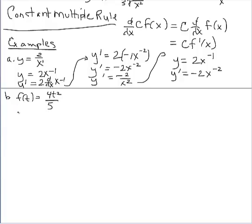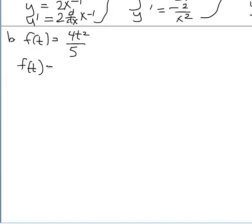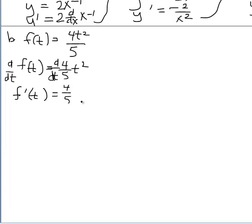I'm going to bring down f of t and get it ready for differentiation: 4 fifths times t squared. Now I'll bring in the derivative operator on both sides of the equation, d over dt. So this derivative looks like f prime of t. Over here, you could pull the 4 fifths in front, move the derivative operator behind it, and then t squared here.